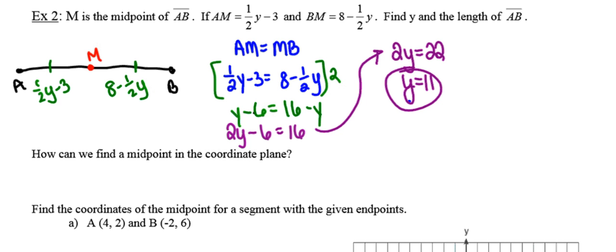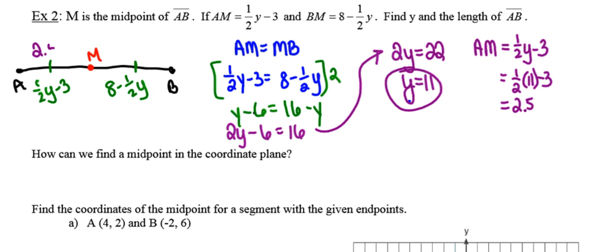If Y is equal to 11, I can go ahead and find the distance between points A and M, and the distance between points M and B. The distance from A to M is one-half Y minus 3, or one-half of 11 minus 3, which is 2 and a half. So this piece is 2 and a half units long, and this piece is 2 and a half units long. Adding them together, the length of the whole line segment is 5 units long.